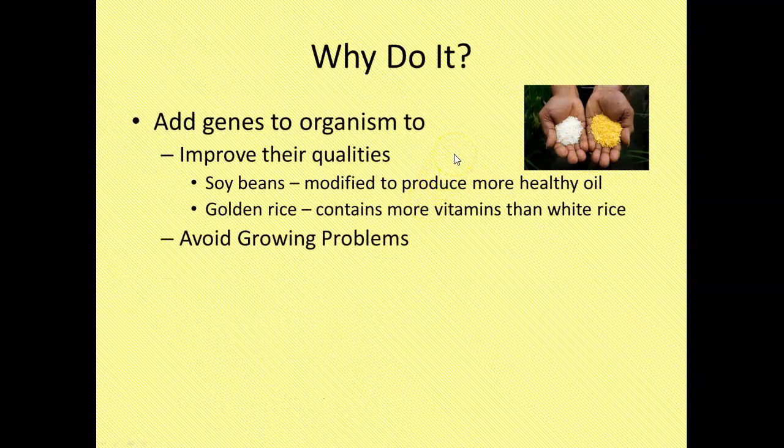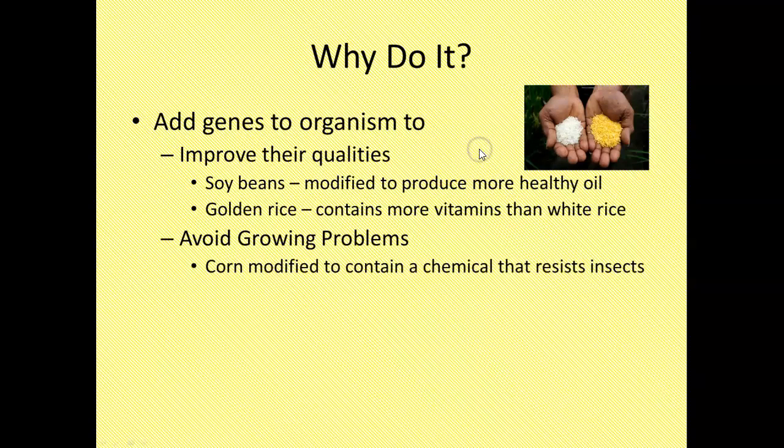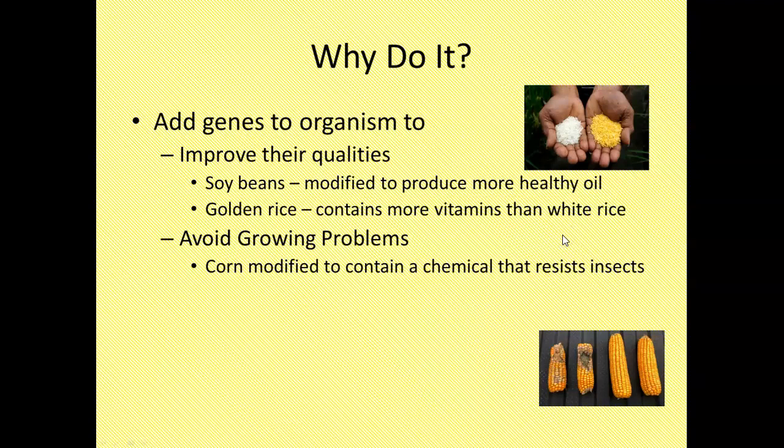Other reasons why we want to genetically modify something is to avoid problems in creating the organism, growing the product. Corn. Corn has been modified so it contains a chemical that resists insects.